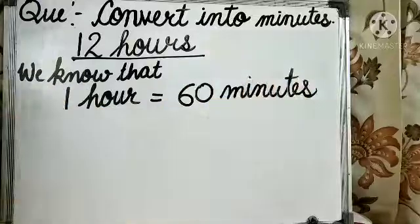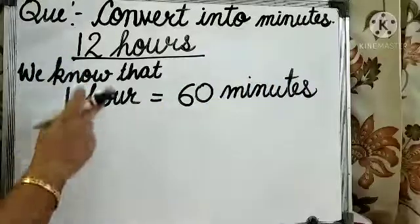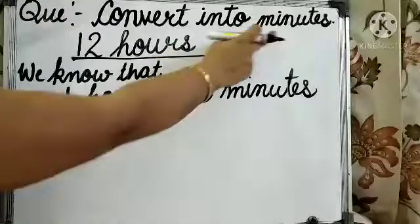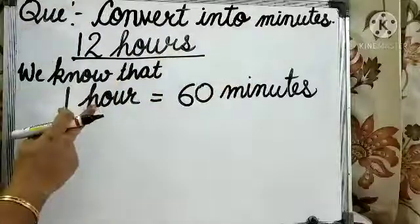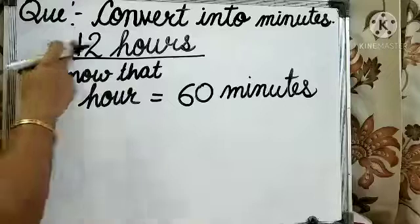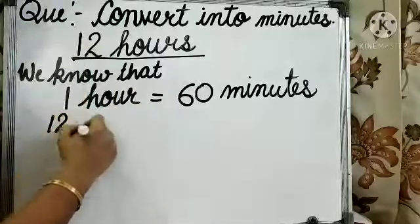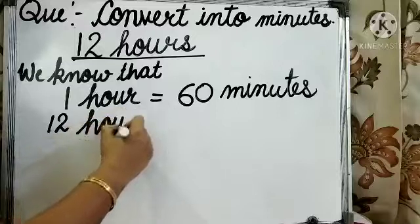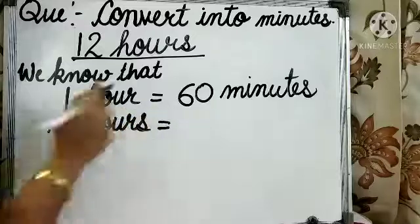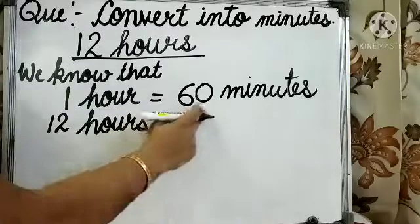Now, what we need to do, to convert hours into minutes, we multiply the number of hours by 60. So, here we have to convert 12 hours. So, we need to multiply 12 by 60.